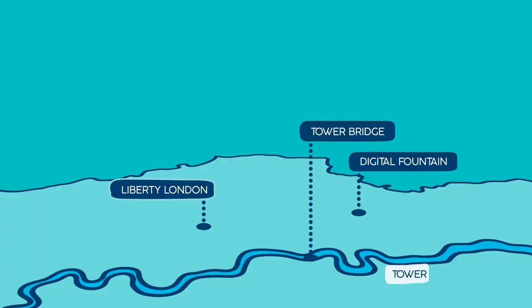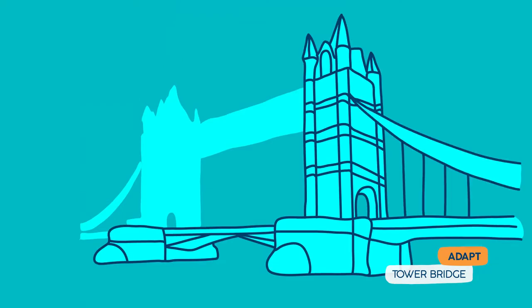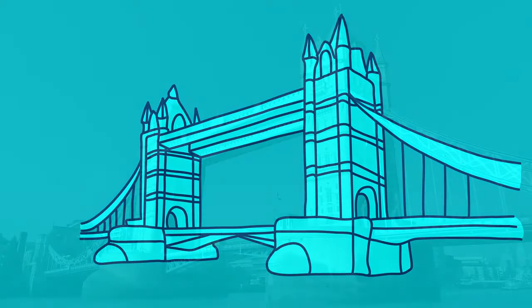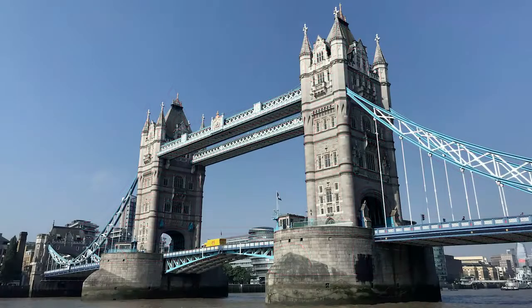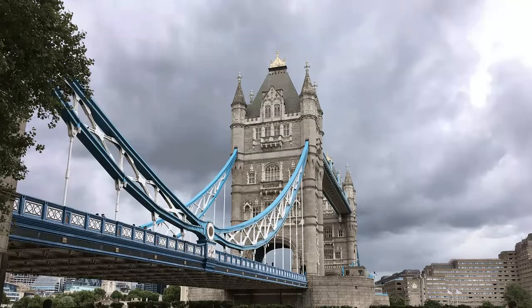Adaptation is used in the iconic London landmark Tower Bridge. Built in 1894, it used steam power to adapt from a bridge for road vehicles to pass over the river, to opening up and creating a passage for tall ships to pass through too.